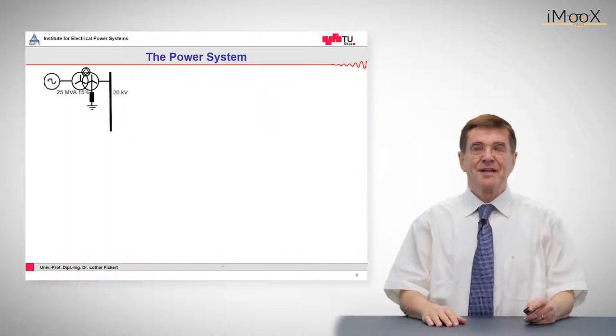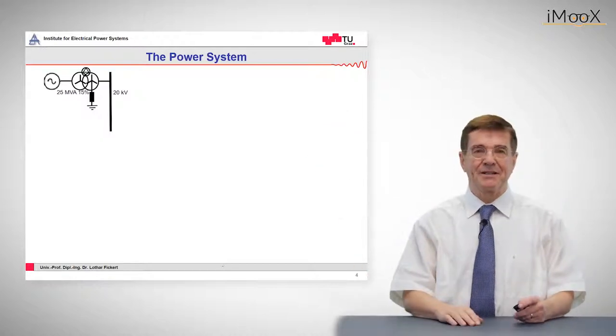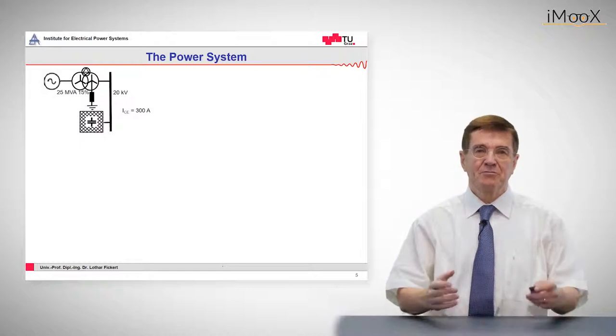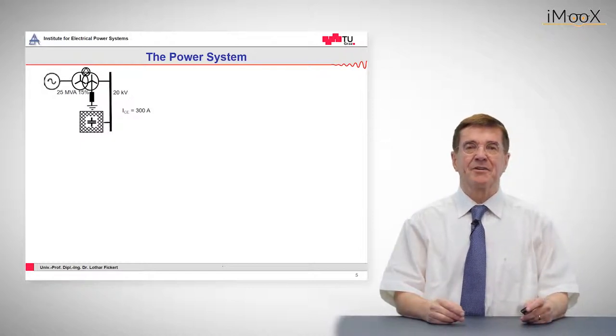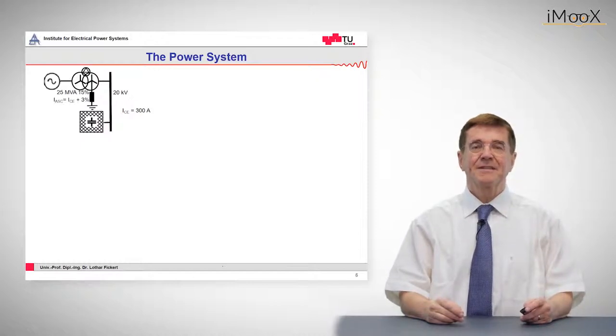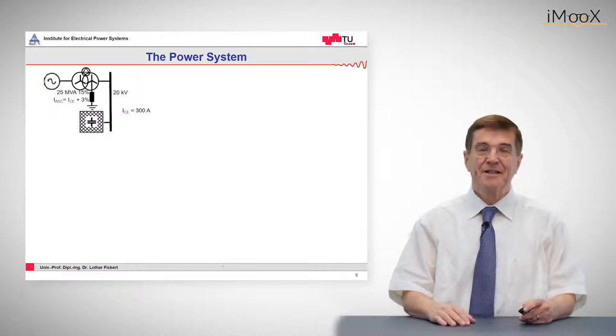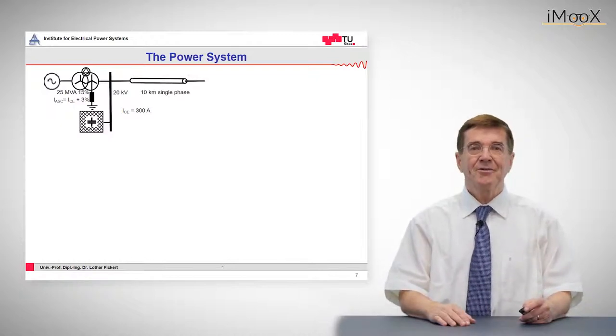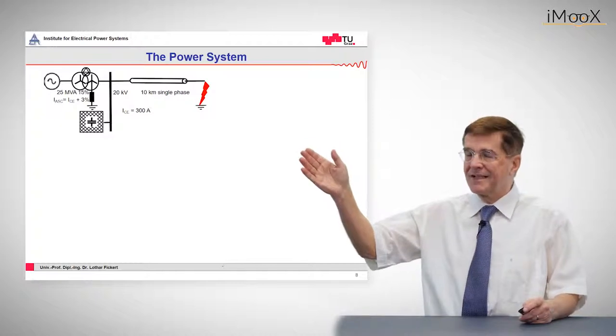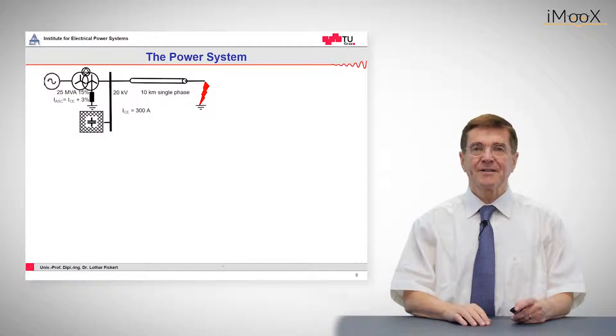I will give you an example of a medium voltage network which consists of a transformer feeding into a 20 kV busbar. Then there is a grid, let's imagine it is a cable grid connected to it with a capacitive earth fault current of 300 amps, and we set the arc suppression coil to 3% overcompensated, so the nominal current of this arc suppression coil is 309 amps. Now there is one faulty line which consists of 10 kilometers of three single phase cables, and at the end we have a short circuit.